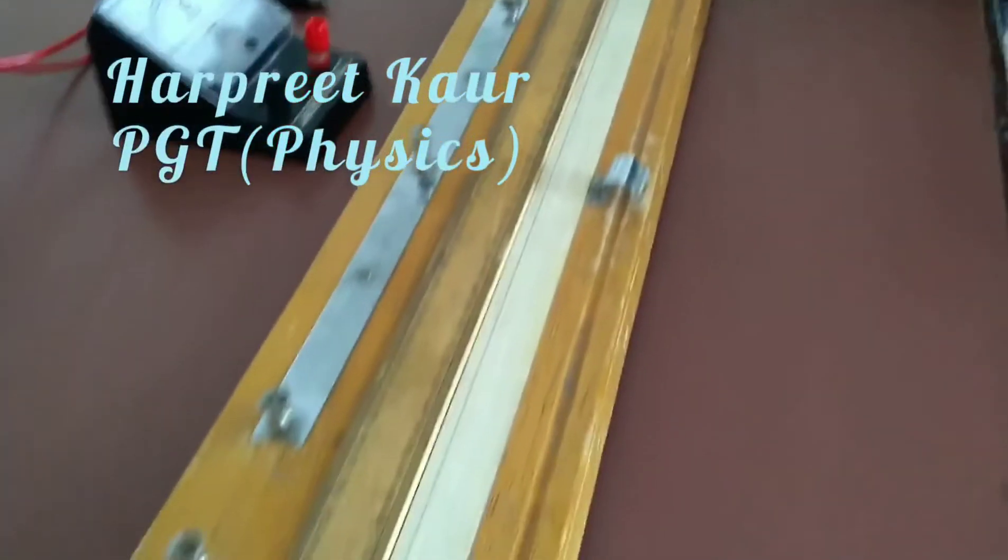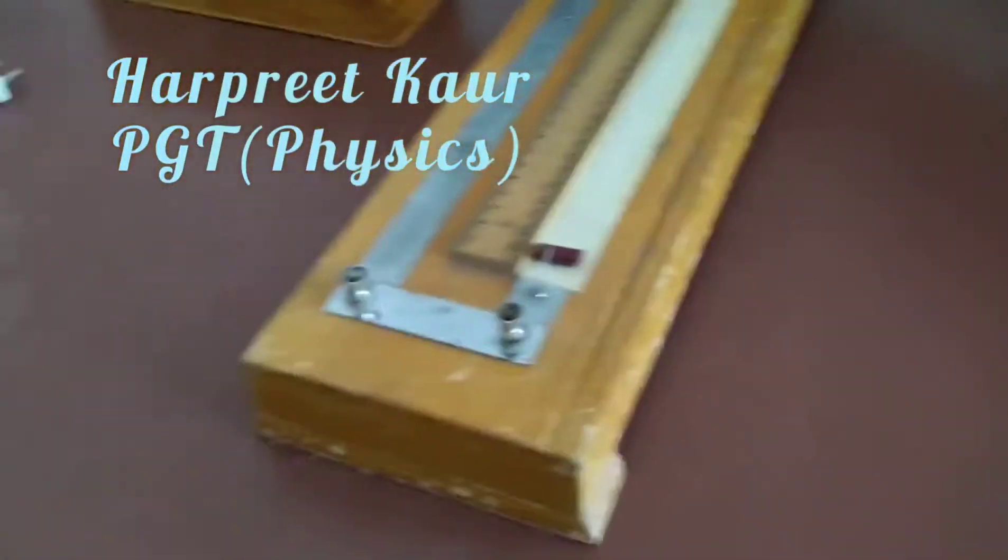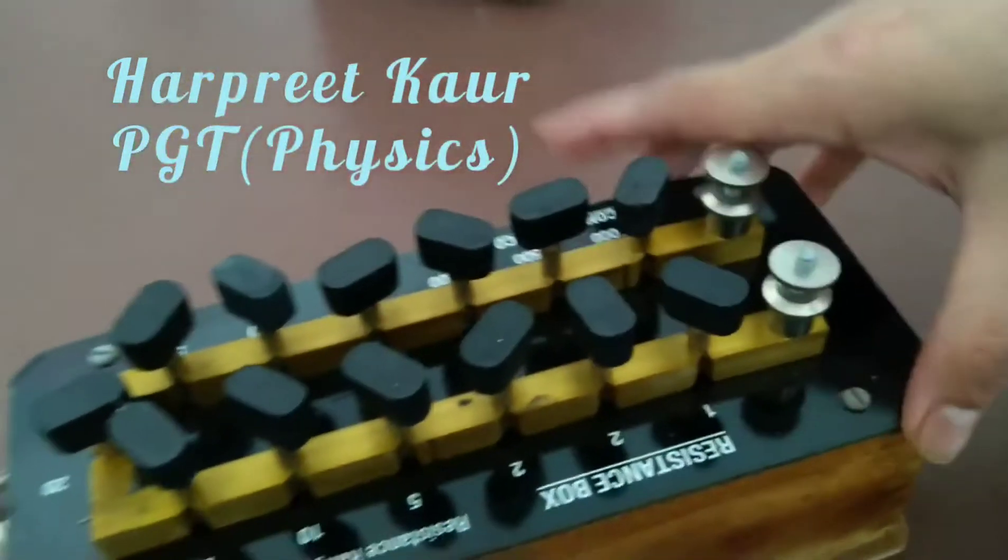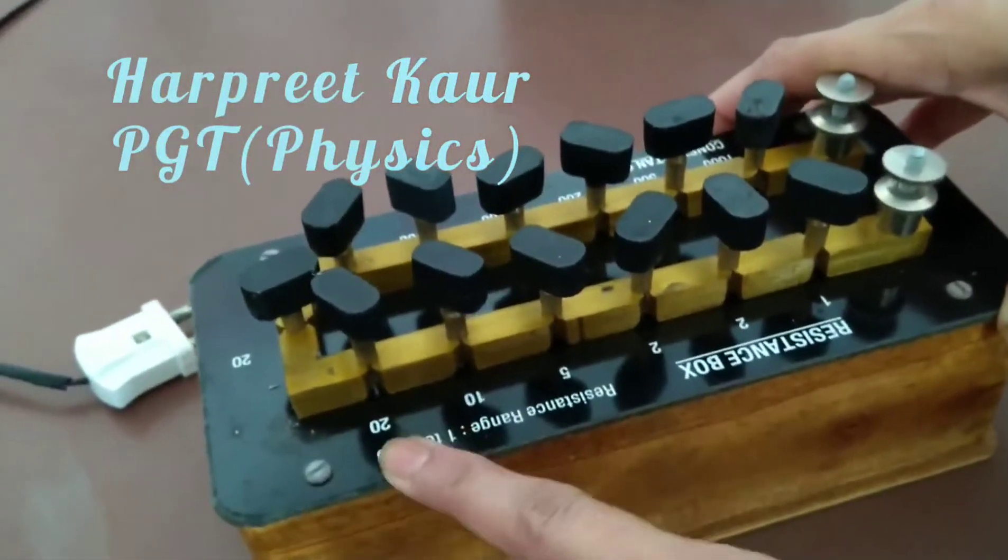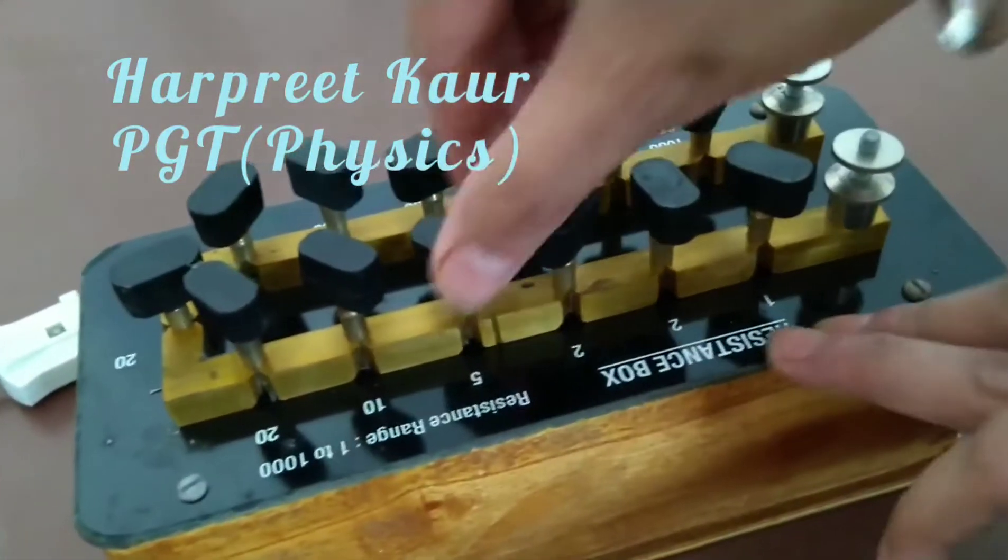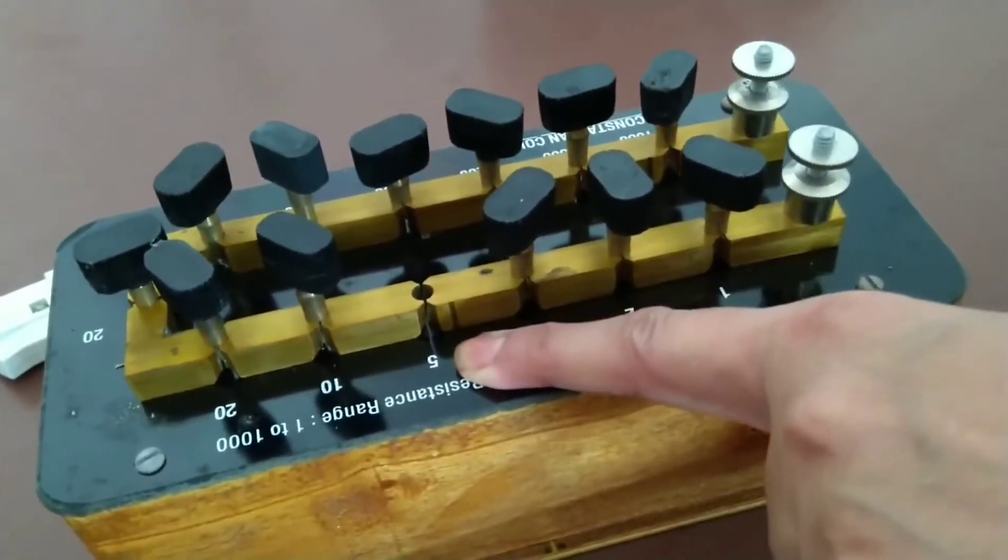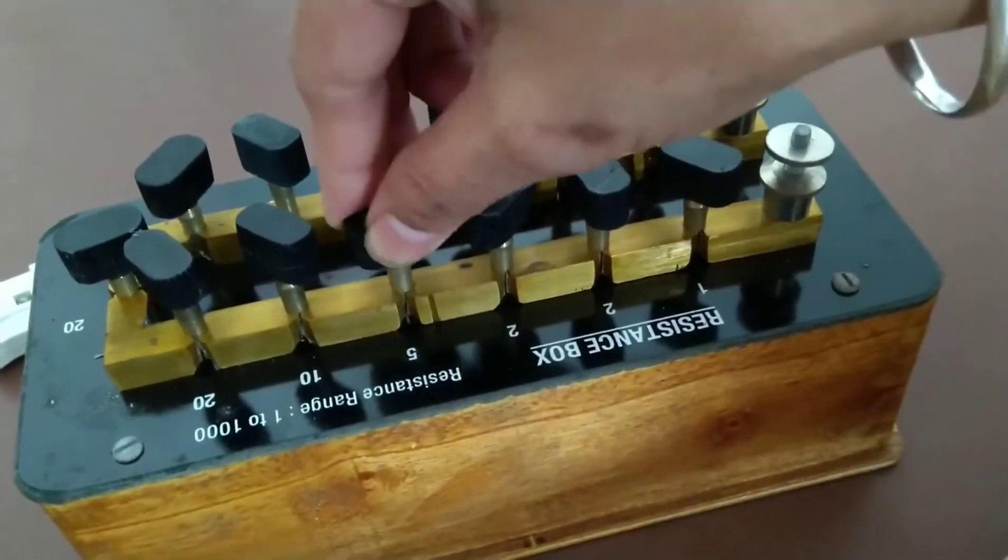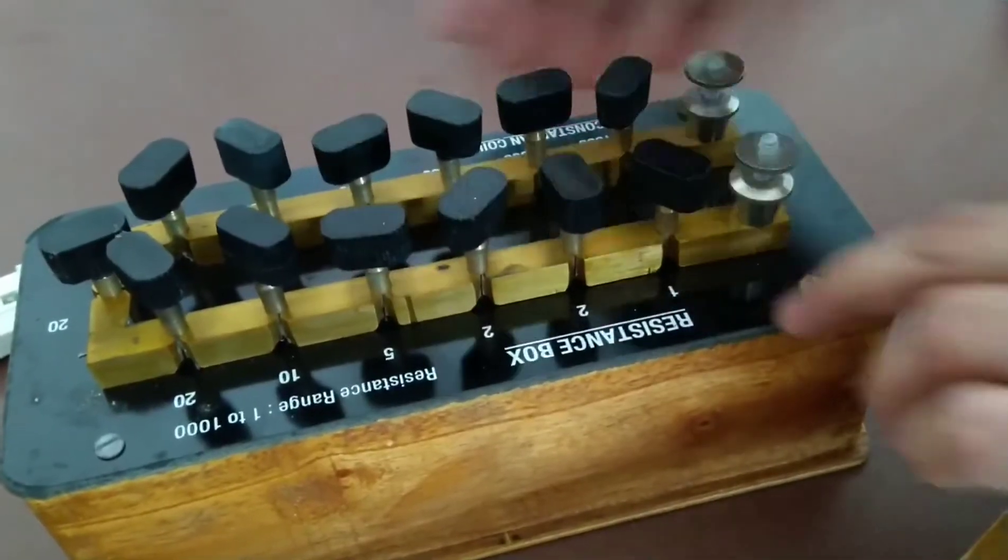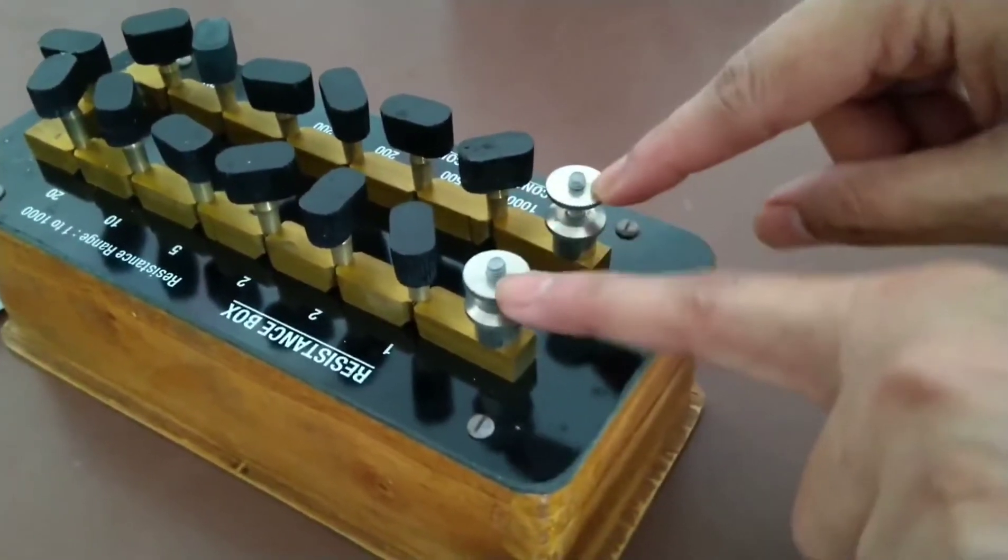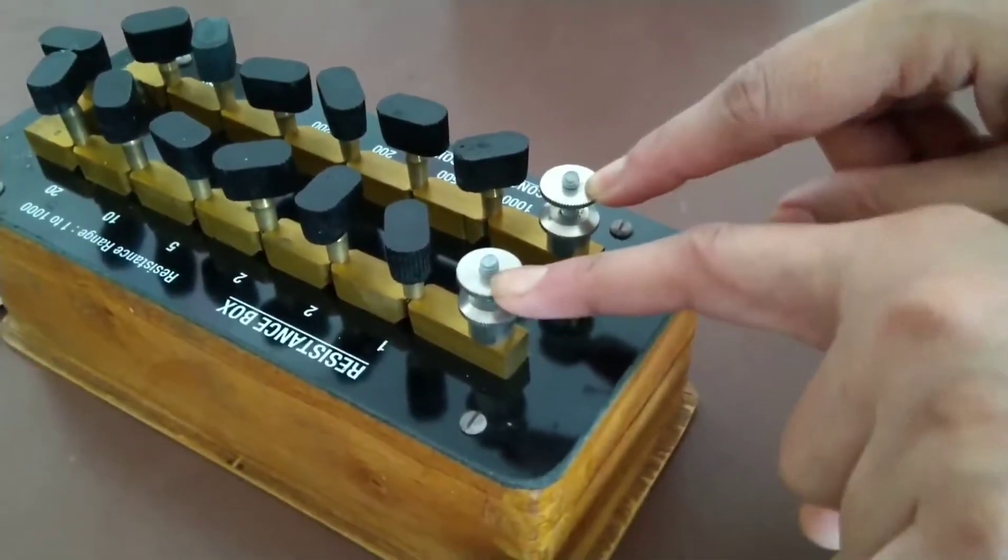This is called meter bridge and it is based on the principle of Wheatstone bridge. This is our resistance box with known variable resistance. These are the resistances 20, 10, 5. When we remove this key we apply the 5 ohm resistance in the circuit. Similarly we can apply the required resistance and these are the two terminals to set this resistance box in the circuit.